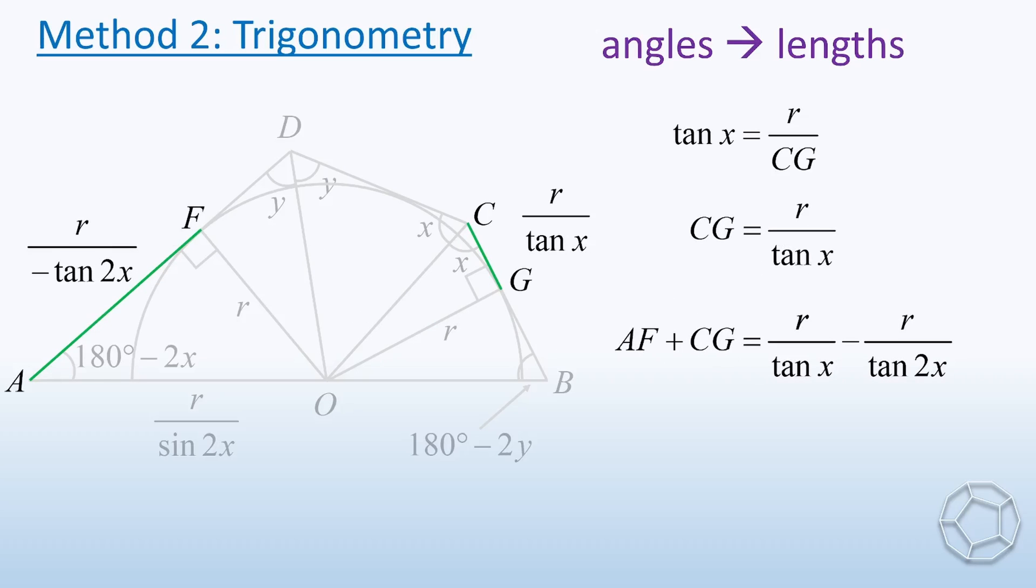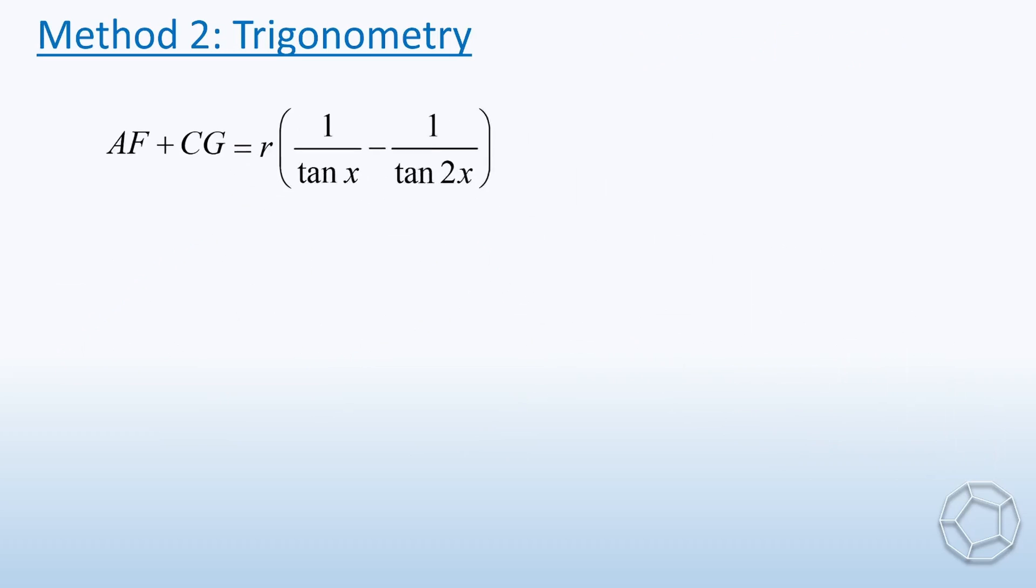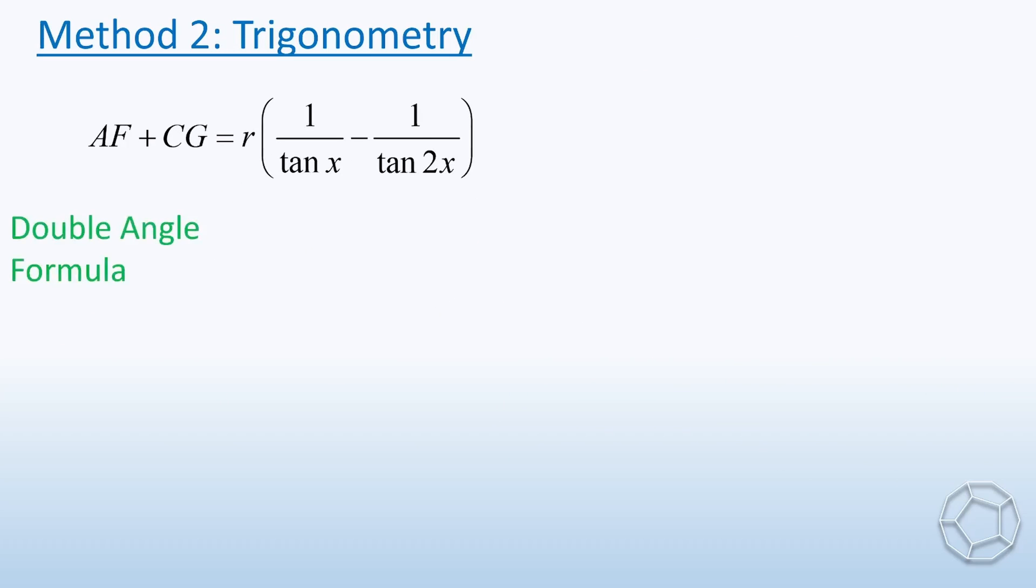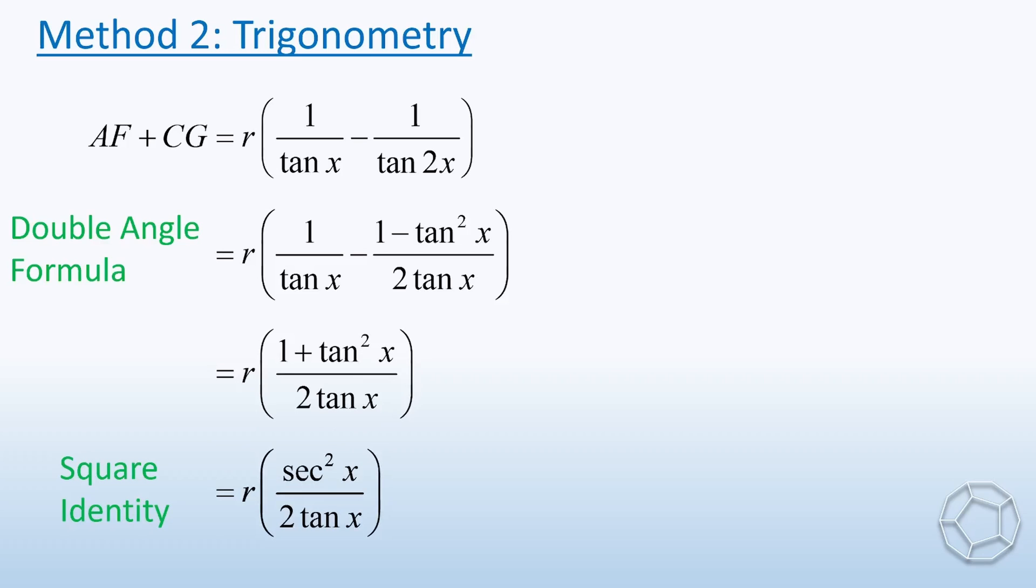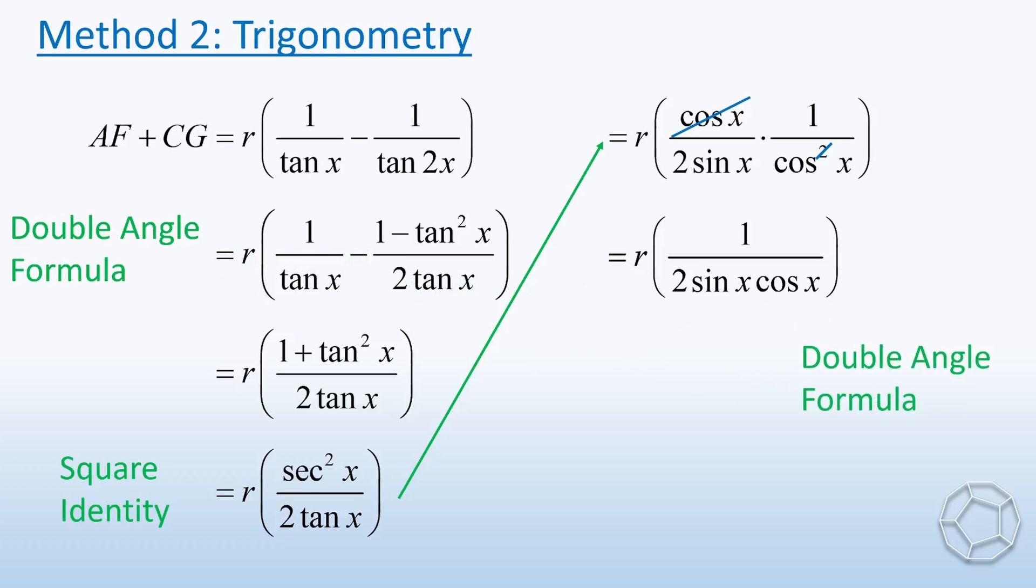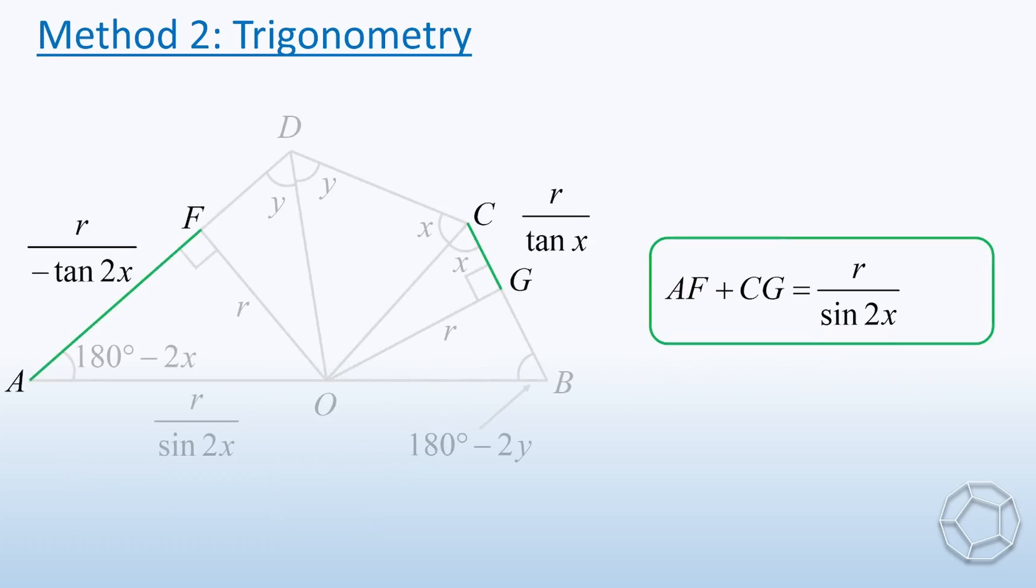There's a common factor R right here. Then we work on the algebra. Apply the double angle formula for tan(2X). Combine the two fractions. Then the numerator equals 1 plus tan²(X). Using square identity, it equals sec²(X). Further simplify the expression. Then the denominator equals 2sin(X)cos(X). At this point, we apply another double angle formula. It is actually sin(2X). Can you recognize this result? If we go back to the figure, you can see that it's the side OA.